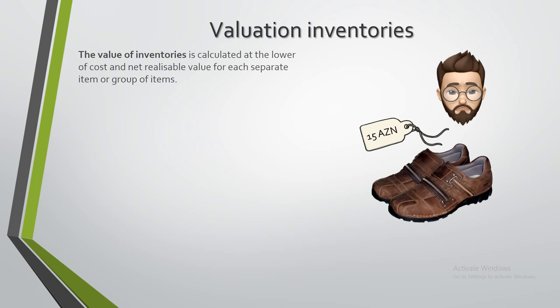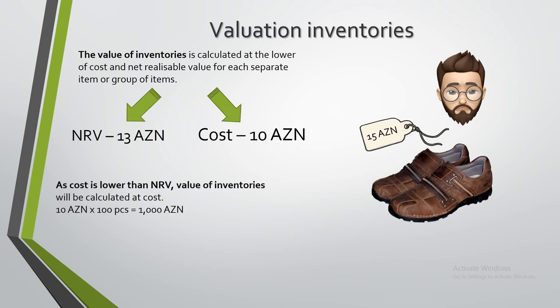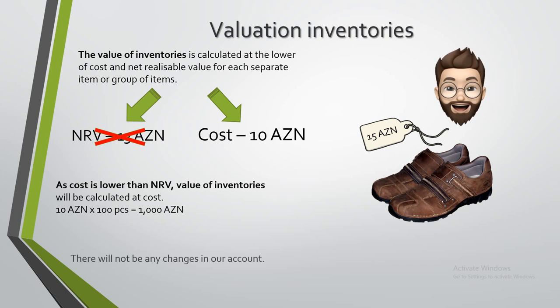As stated before, the value of inventory is calculated as the lower of cost and net realizable value for each group. In this case, cost of 10 ACN is lower than NRV of 13 ACN. So we ignore the NRV and the value of inventories is calculated at cost. There will be no changes in our accounts.